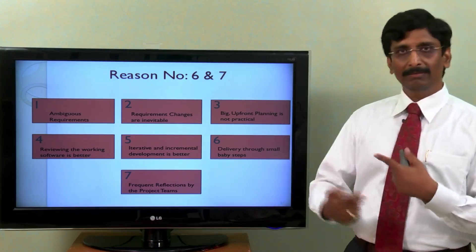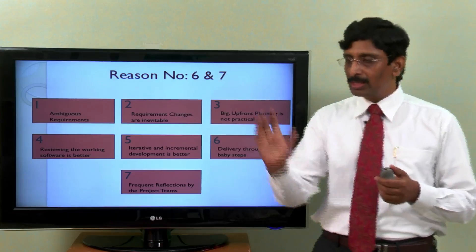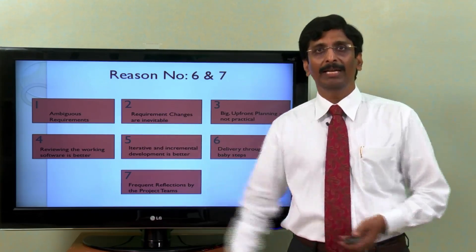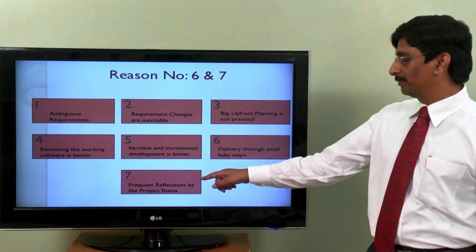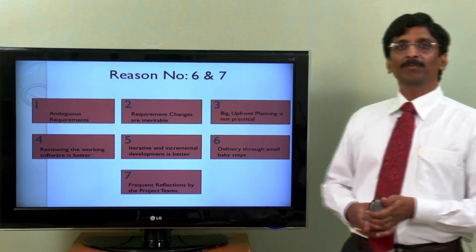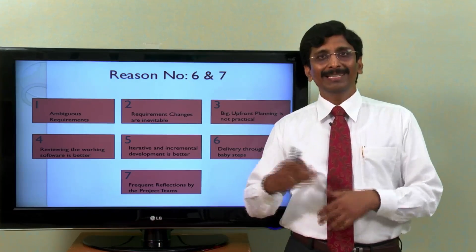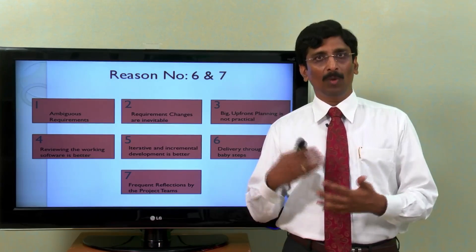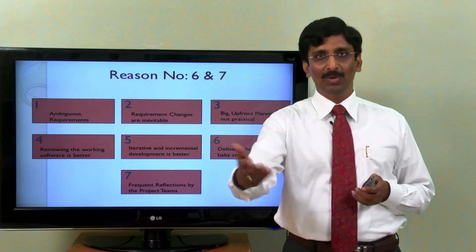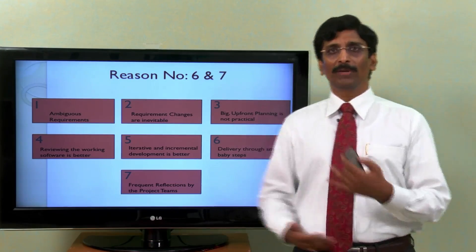At the end of every iteration, that's what Agile calls a parallel step-by-step complete delivery. At the end of every iteration, the project team sits with the customers, the end users and their managers and discuss what went right, what went wrong, what should we improve. Is this what you really wanted? We do all those reflections.